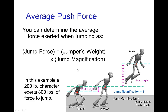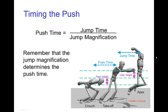So in that case, if the character's weight is two hundred pounds, then the amount of force that they exert on the ground to do this big jump would be eight hundred pounds. You should remember that the jump magnification also affects the timing when we're pushing off the ground.